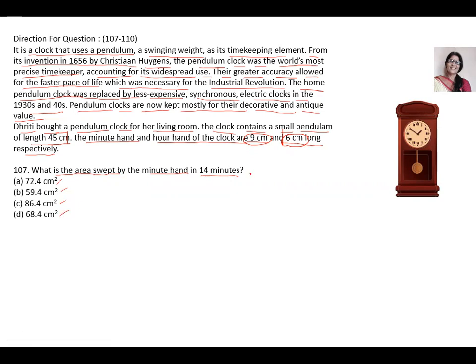So here when minute hand is sweeping the area that means that is the area of a sector and the area of sector we know that is if it makes an angle theta it will be theta over 360 multiplied by pi r square where r is the radius and the length of the minute hand is your radius. Now how to find theta? Theta will find in a shortcut method.